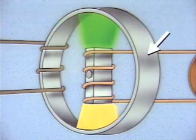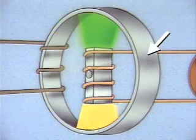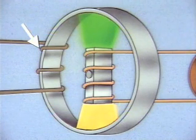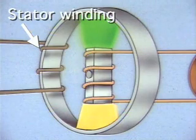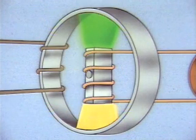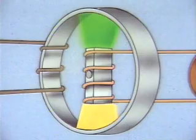The component of the generator that doesn't rotate can be referred to as the stator. The conductor that is wound around it can be called the stator winding. The ends of the conductor are connected to the power system.